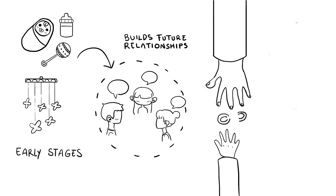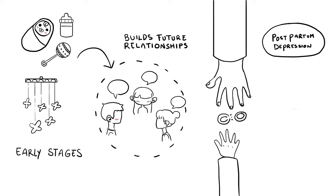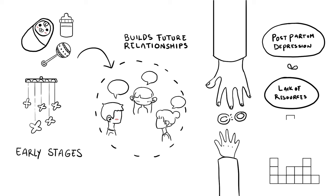It is hard in some families, though, for the child to get a sense of attachment to their mother. There are a few reasons for this — sometimes the mother has postpartum depression and withdraws from the baby, or there's a lack of resources that makes the family less ready to focus on building an attachment.